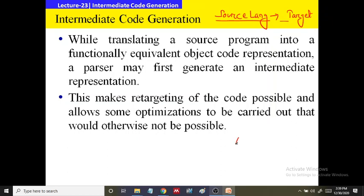The assembly level languages are like: ADD R0, R1. Here, it performs R0 = R0 + R1. So here we are having three addresses — three operands.